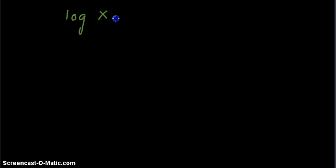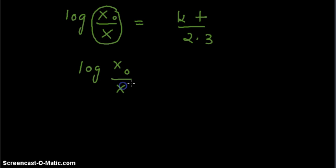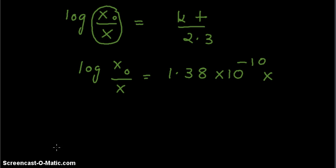The second step is to use the formula: log(x₀ / x) = k × t / 2.3, to find the value of this fraction. Plugging in the values, we get log(x₀ / x) = 1.38 × 10⁻¹⁰ multiplied by the time elapsed, 5 × 10⁹, divided by 2.3.